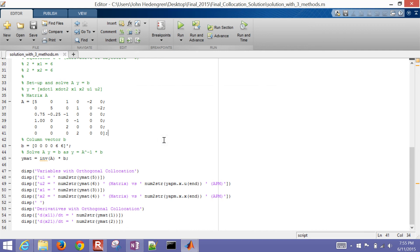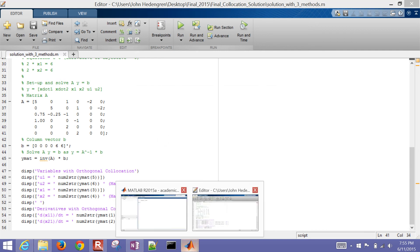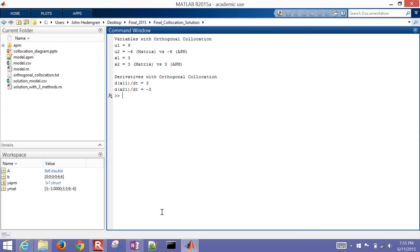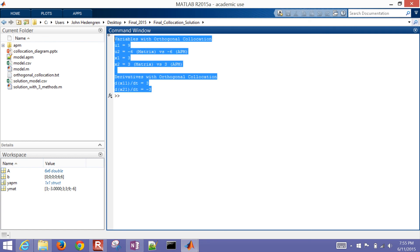Okay, so when I run it, come back over to the MATLAB prompt. There it has my solution. And so you can see the value of U1, U2, X1, X2, and then DX1/DT and DX2/DT.